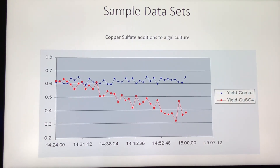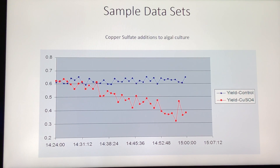In this data set we see yield decrease as copper sulfate is slowly being added to a live culture. The lower yield values represent a dying or stressed algal population.